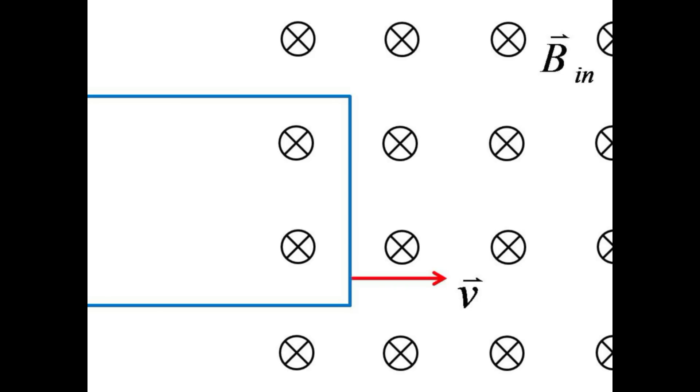As the rectangular loop enters the field, the magnetic flux increases. That is, more magnetic field lines are piercing through the surface with sides formed by the rectangle.